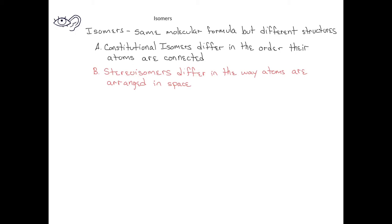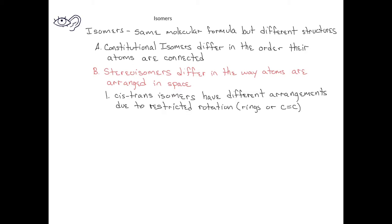Within the category of stereoisomers, we can further divide these into cis-trans isomers, which we've seen in previous videos. These result from different arrangements due to restricted rotation, for example in cyclic rings or in alkenes.